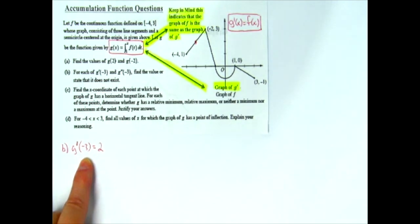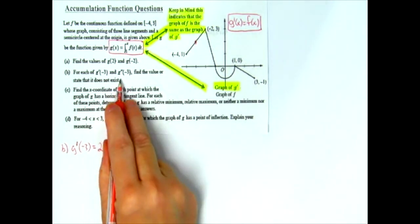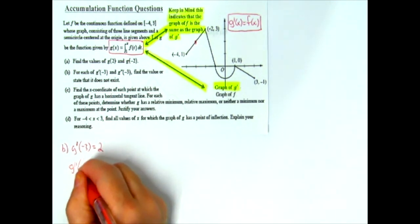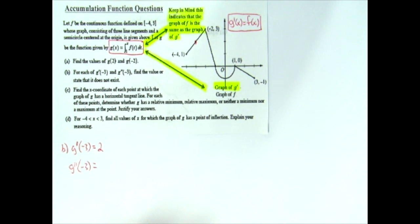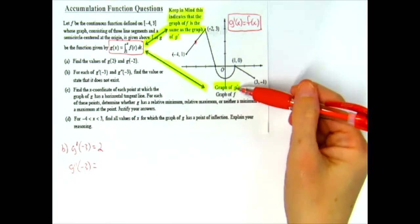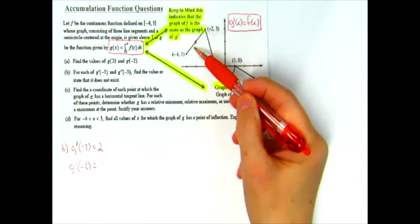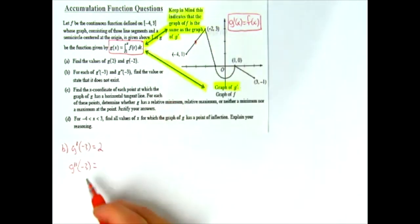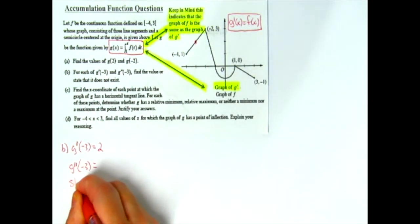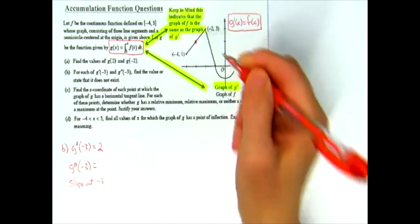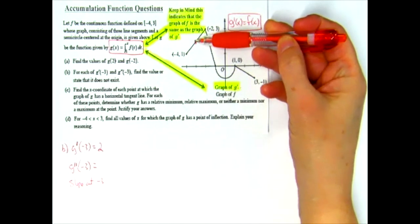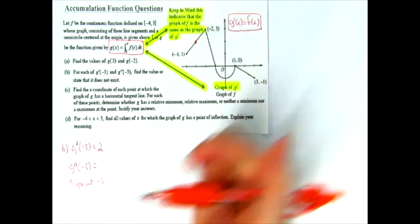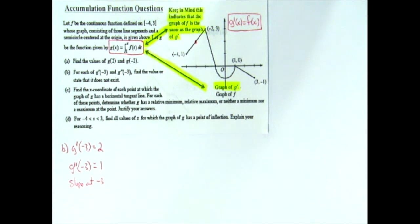The second part asks for g double prime at negative three. If I'm going from g to g prime I'm taking the derivative, and if I'm at g prime and want g double prime, I just need the slope — I take the derivative again. So I need to find the slope at negative three. At negative three it's a straight line, and the slope is up one over one, so g double prime of negative three equals one.